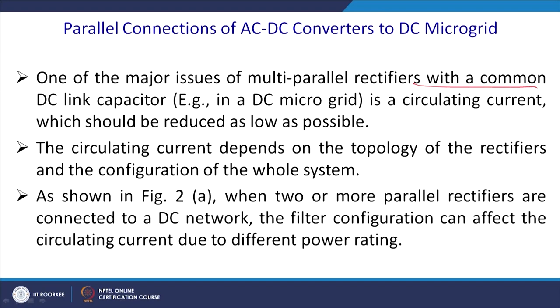One major issue in multi-parallel rectifiers with a common DC link capacitor, as in a microgrid, is circulating current. If there is a slight mismatch between the pole voltages of the two DC buses, a circulating current can exist between them. This circulating current causes heating and thus power losses. The circulating current depends on the topology of the rectifier and the configuration of the overall system.